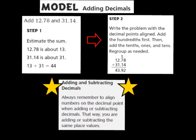12 and 78 hundredths is about 13. 31 and 14 hundredths is about 31. Now that I've rounded those to the nearest whole numbers, I'm going to add them together. 13 plus 31 is 44, so my estimated answer is about 44. My exact answer when I find the sum should be close to that estimated answer of 44.